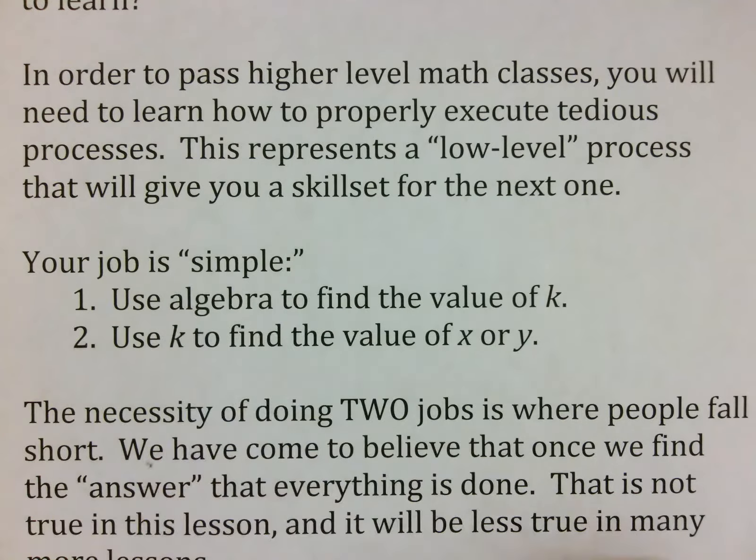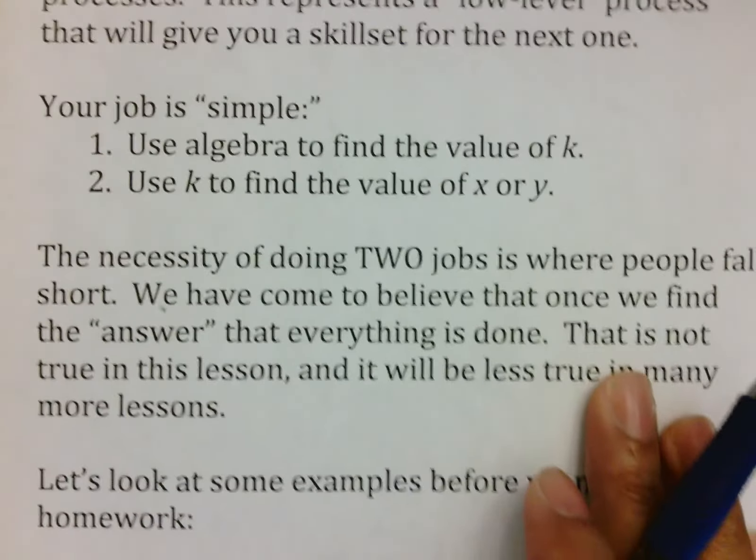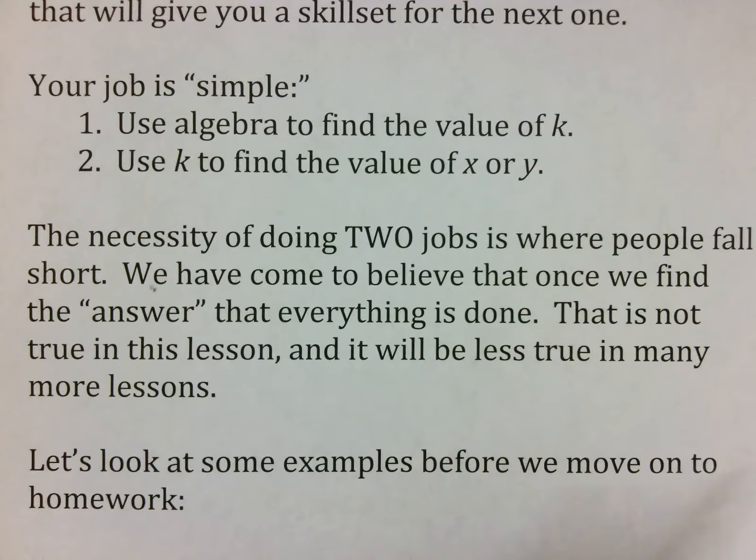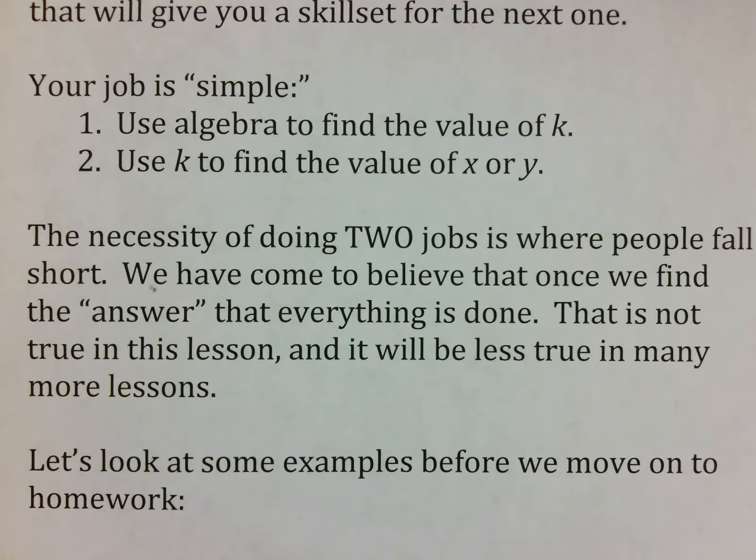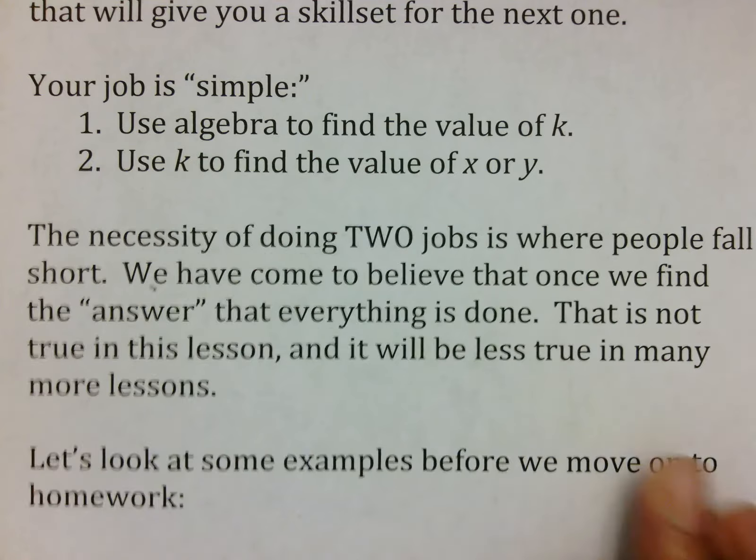So your job is simple. I put that in quotes because it is easy, but it's not easy for everybody. Your first step is to use algebra to find the value of k, which means we have that constant of variation. And then the second thing we want to do is find the value of x or y. Now, of course, there's two or three steps to do that. There's another two or three steps to do that. And that is where the process gets long. But as long as you understand that this is your overall job, if you use that as your study guide or use that as your rule of what direct variation is, I think you'll be fine.